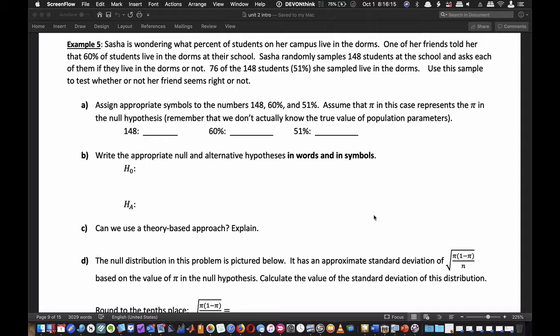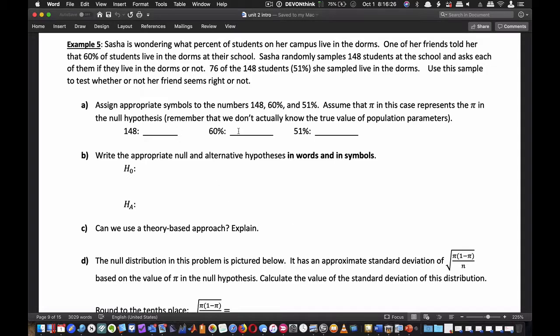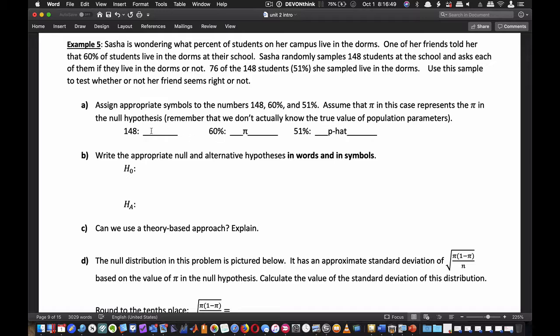Part A: Assign appropriate symbols to the numbers 148, 60%, and 51%. I'm hoping you entered π for the 60%—that's our population proportion parameter. 51% is our p̂, the sample proportion. And 148 is the sample size n, which you can think of as the number of tosses in the applet.